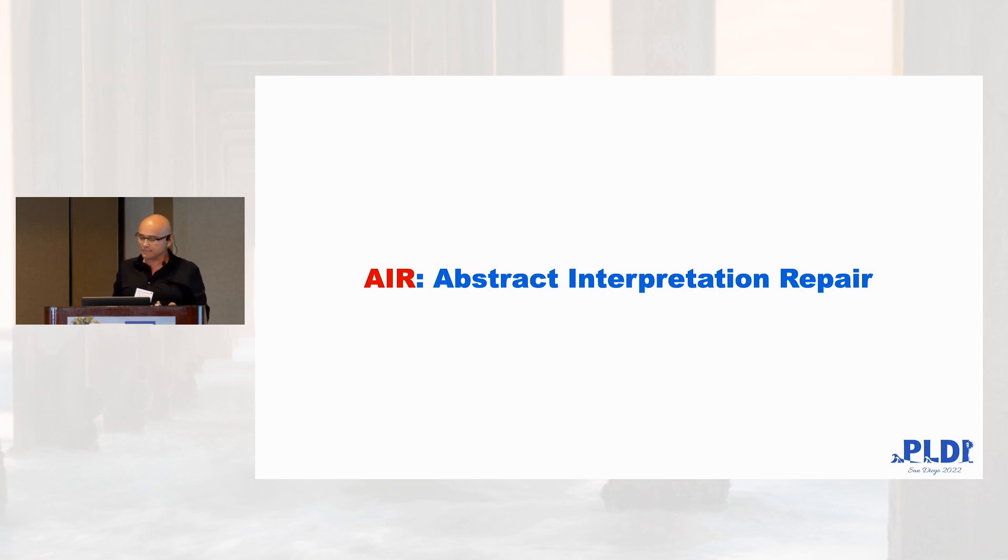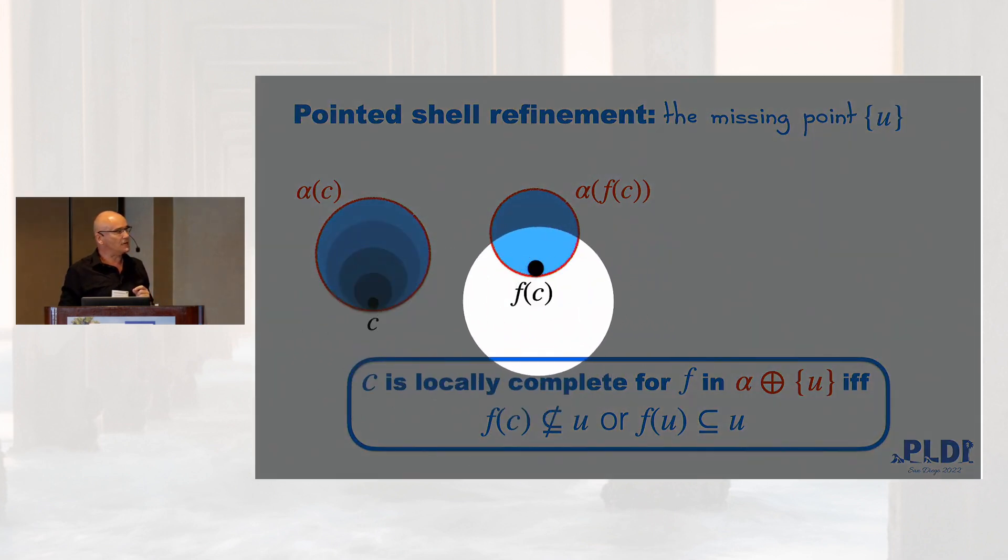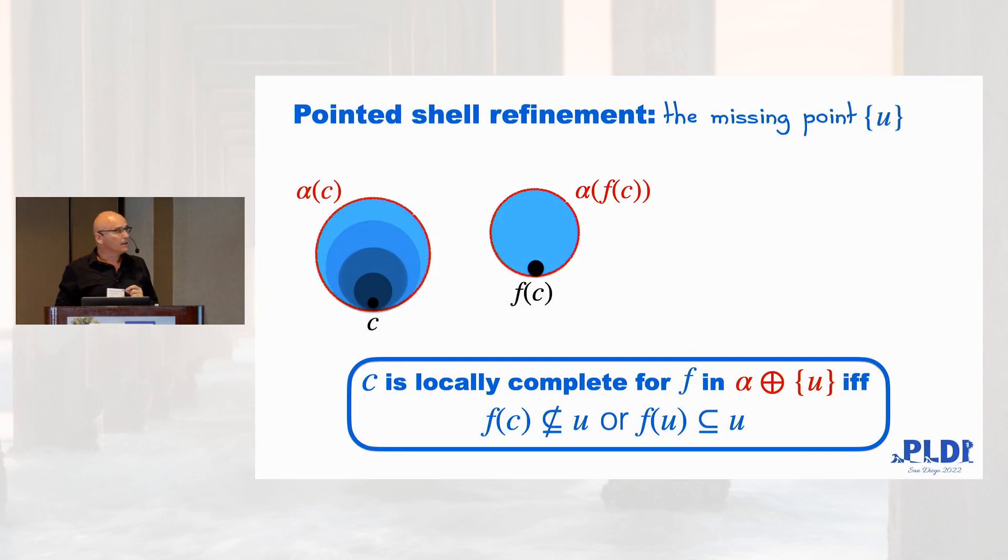How it works? We decided to produce the simplest possible refinement. That means adding one point to your abstract domain. The point is called U. And this is the domain that is updated by embedding that point into the abstraction. What is that point? In order to see how it works, imagine that you want to be complete with respect to C and C computes F of C. And then it's abstracted here.